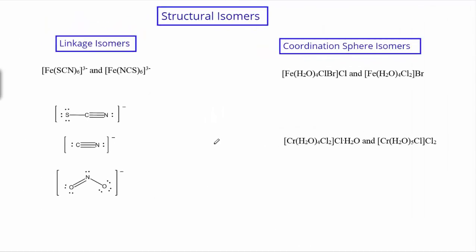Looking at structural isomers, the first type are linkage isomers, which only deal with a few different ligands. A ligand is a Lewis base — an electron pair donor — and it has to have a non-bonding pair of electrons. In some ligands, like SCN, there are more than one atom that actually has a non-bonding pair of electrons, so it could potentially bind to the central metal ion through more than one atom, giving a different linkage. We call the atom with the lone pair the donor atom, and with multiple donor atoms, linkage isomers are possible.